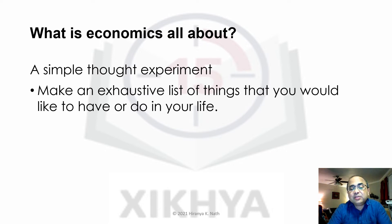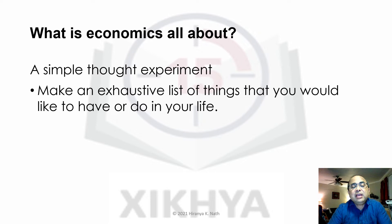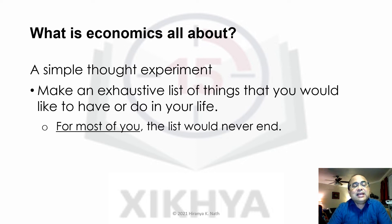You first start with the food items that you would like to have for breakfast, for lunch, or for dinner. Then you move on to the clothes that you would like to wear, the shoes that you would like to put on, the electronic gadgets that you would like to have, the vehicles that you would like to ride or drive, the house that you would like to own. In terms of how you spend your time, you would like to read, watch a movie, play soccer, spend time with friends and family. And in terms of what you want to become, let's say you want to become an engineer, a writer, a singer, or an actor. This list will go on and on, and after a while, you will realize that this list will never end.